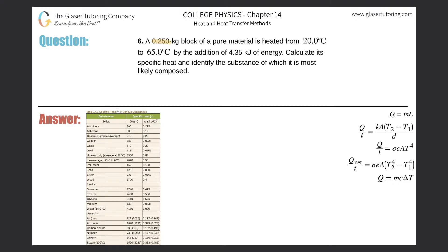Number six: A 0.25 kilogram block of a pure material is heated from 20 degrees Celsius to 65 degrees Celsius by the addition of 4.35 kilojoules of energy. Calculate its specific heat and identify the substance.